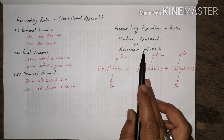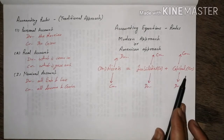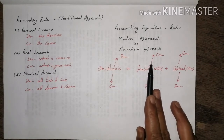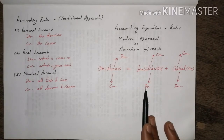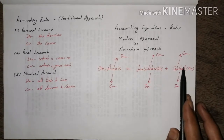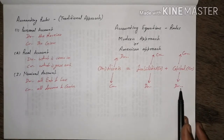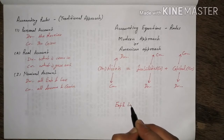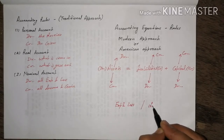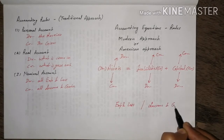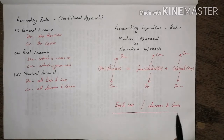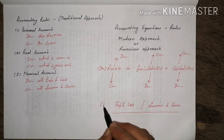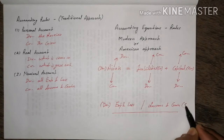Under this accounting equation rule — Assets = Liabilities + Capital — asset value increase means debit, decrease means credit; liability value increase means credit, decrease means debit; capital value increase means credit, decrease means debit. For expenses and losses, and income and gain, the same rule as the nominal account applies: all expenses and losses are debited, and all income and gain are credited.